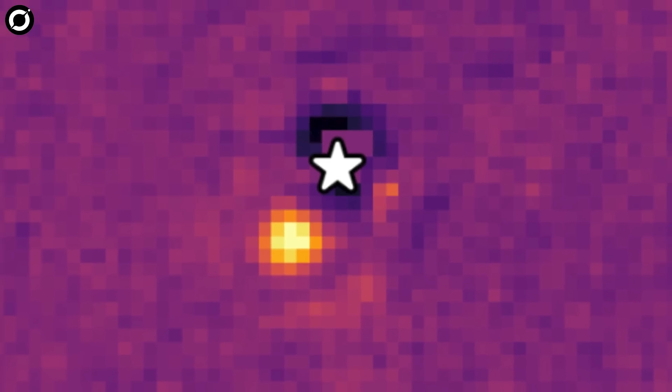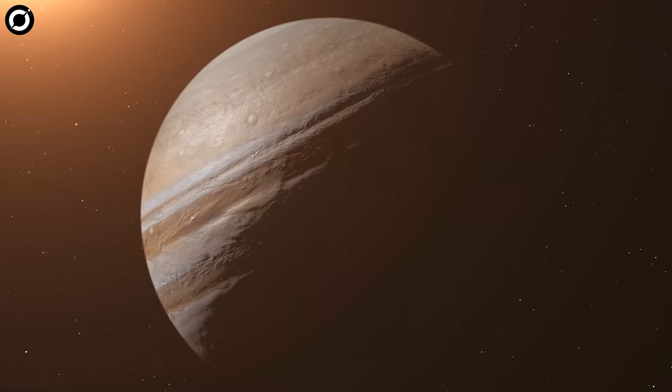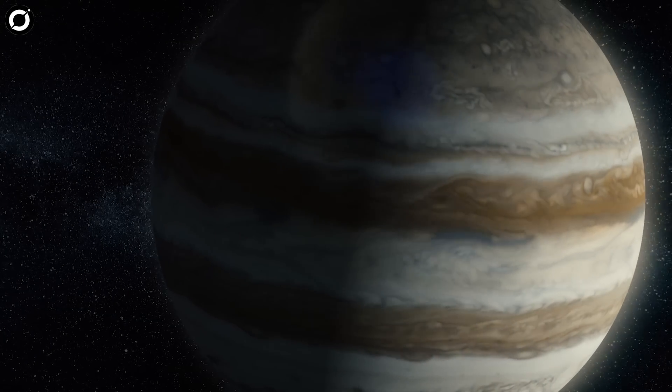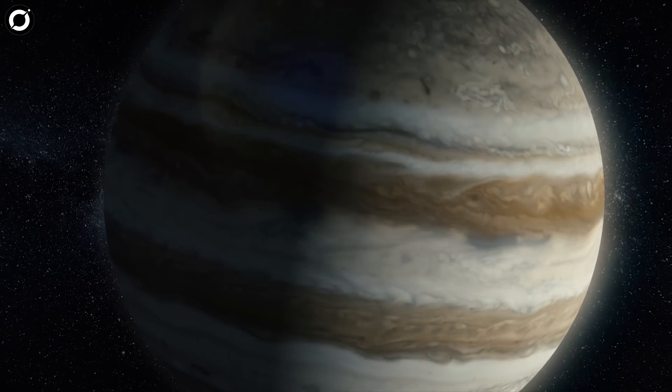HIP 65426 b's surface features weren't visible in the image, but it would probably look banded like Jupiter with belts caused by variations in temperature and composition, and might have spots in its atmosphere caused by storms or vortices.